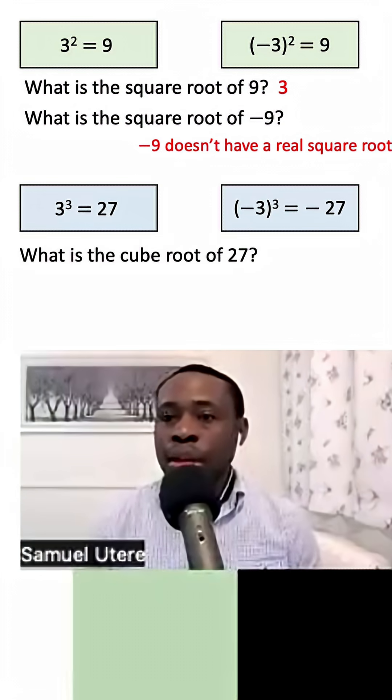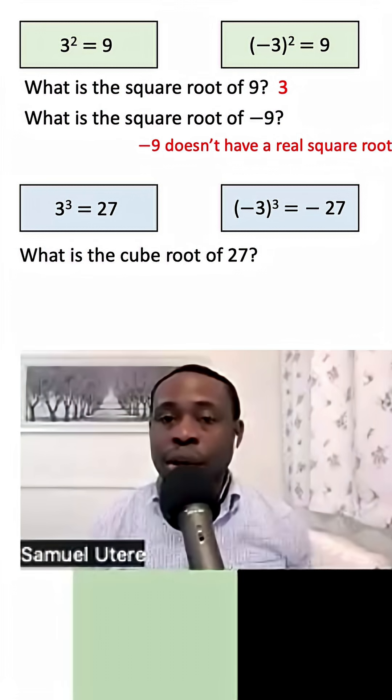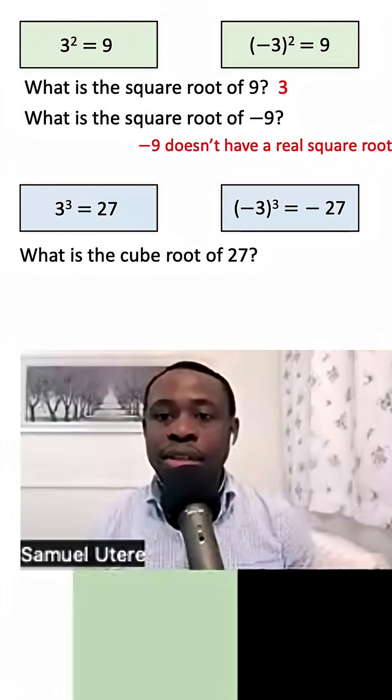But for a cube root, we can do the cube of 3, which is 3 to the power of 3, is 27. And the cube of negative 3 is negative 27.